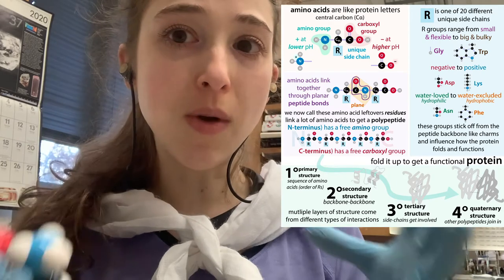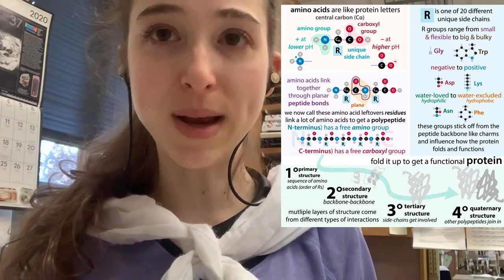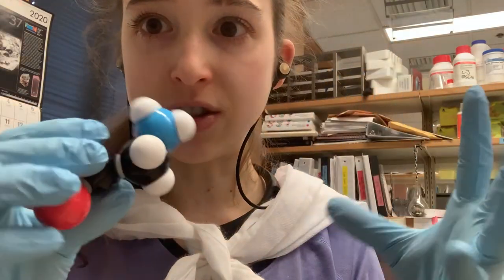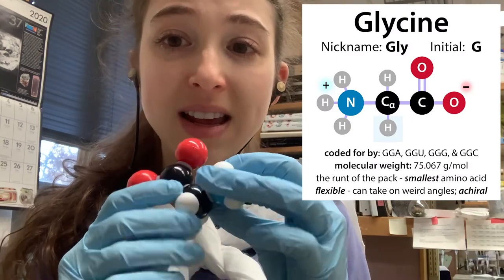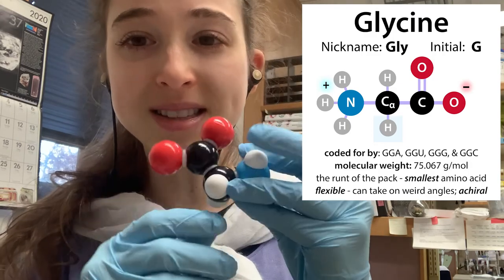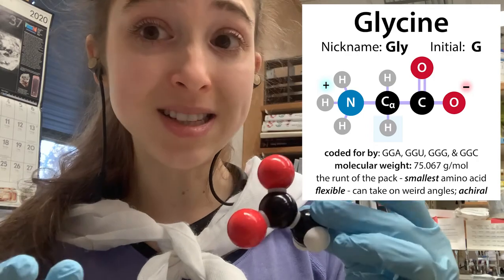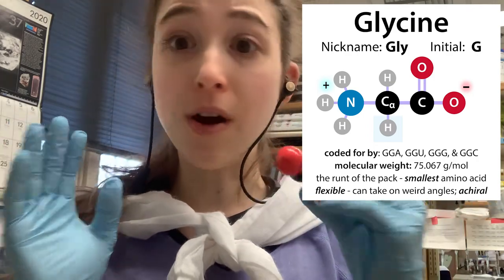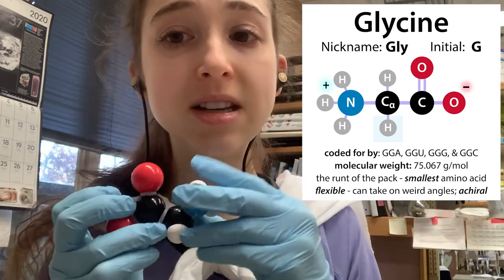I'm going to take you one by one through the amino acids and what makes them special. Glycine has a hydrogen as its side chain — that's it! So glycine is the smallest amino acid; it's the simplest in some senses because it just has a hydrogen. When you think of G for glycine, think 'loosey-goosey,' because glycine is far from generic — it is a weirdo on the chart of amino acids.